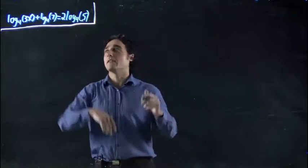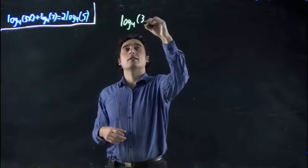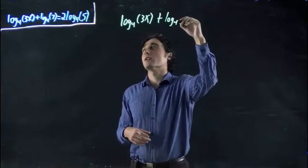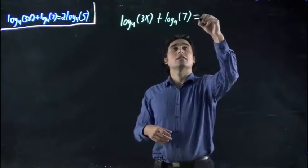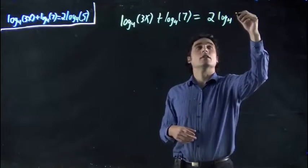So we'll get to that in a sec. What do we got? Log to the base 4 of 3x plus log to the base 4 of 7. All of that is equal to 2 times log to the base 4 of 5.